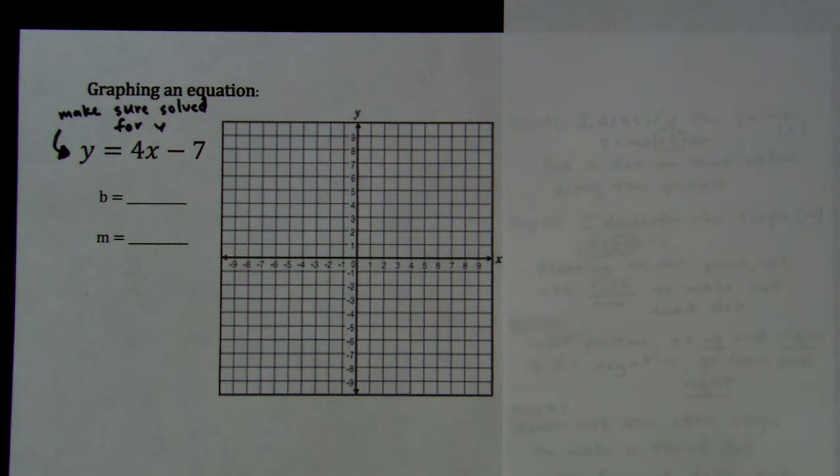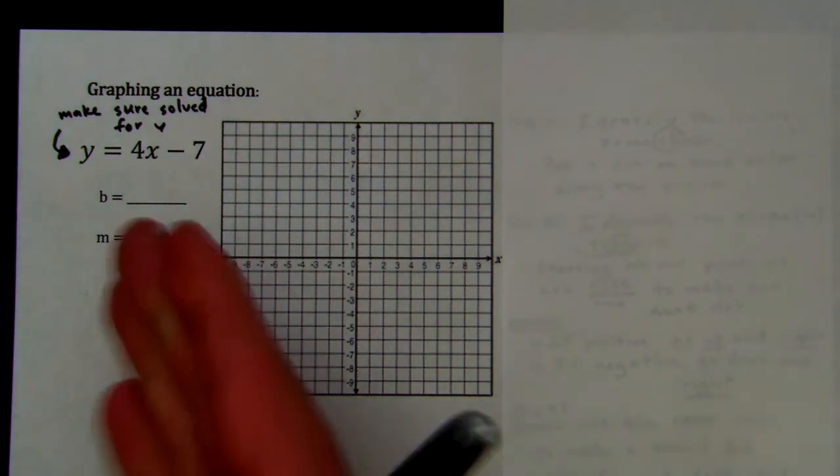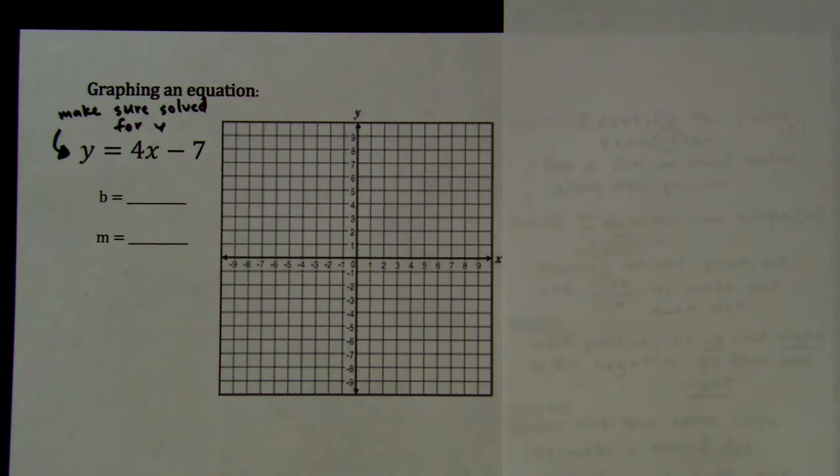The first thing you have to do is make sure your equation is solved for y. In this case, our equation y equals 4x minus 7 is solved for y, but we need to just double check that it's solved for y in case you don't have this exact same equation.